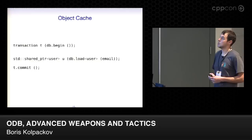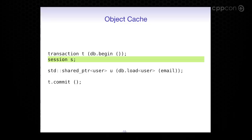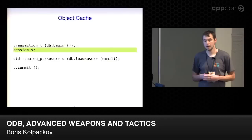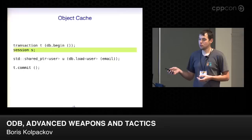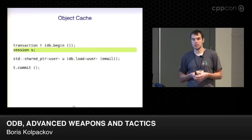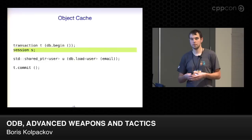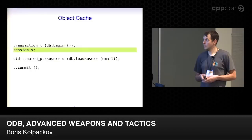A session is essentially an object cache — a lightweight, single-threaded default implementation. Once ODB loads the first user object, it stores it in the cache. When it needs to load the subsequent user object for the reported bugs, it sees it's already in the cache and patches the pointer back to that object. So a session is necessary if you want to load bidirectional relationships. In ODB you can also provide your own session with more advanced functionality — for example, one of the examples shows how to implement a session that tracks changes in objects and automatically flushes their state when you call commit, similar to what Hibernate does in Java.